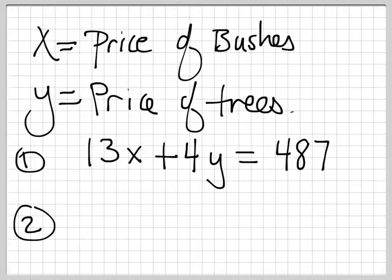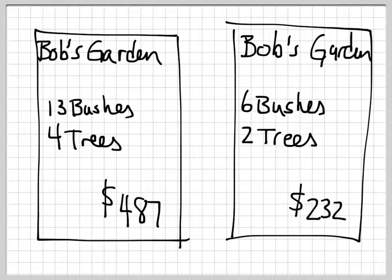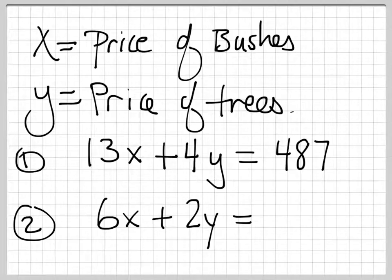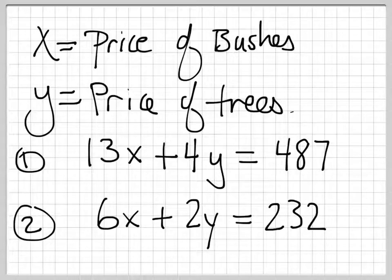From receipt 2, just looking back, we get that 6 times the price of bushes plus 2 times the price of trees was a total of $232. At this point, we've got two equations, two unknowns, and we can go ahead and solve it.